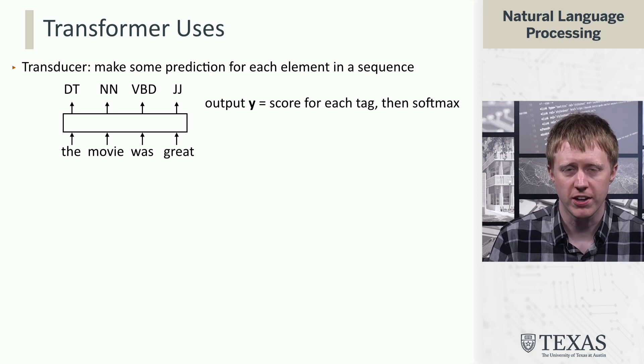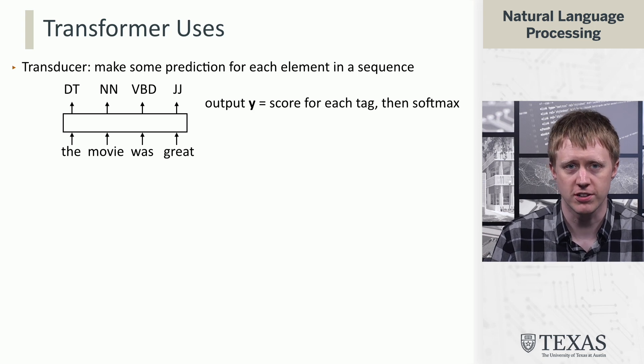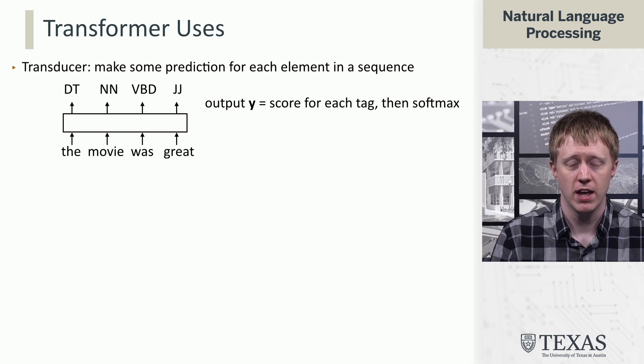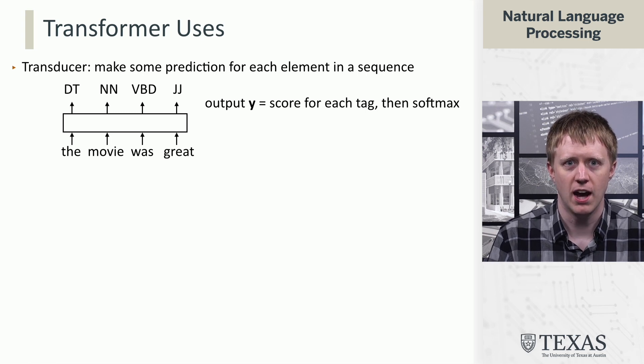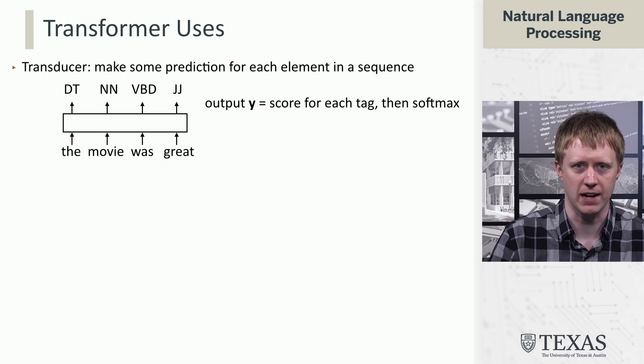One of the things we can do is we can actually just make a classification decision for each item in a sequence. So if we want to do something like part of speech tagging, we take those output representations for each token.